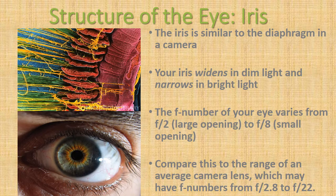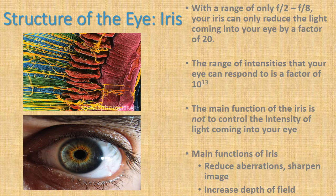The iris is similar to the diaphragm in a camera. Your iris widens in dim light and narrows in bright light. The f-number of your eye varies from f/2 (large opening) to f/8 (small opening). Compare this to the range of an average camera lens: f/2.8 to f/22. With a range of only f/2 to f/8, your iris can only reduce the light coming into your eye by a factor of 20.